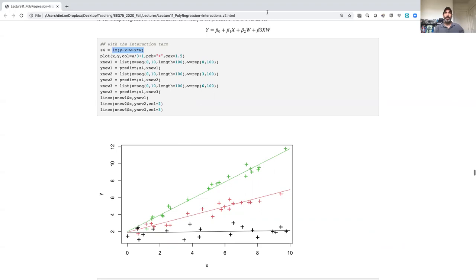So when I'm including this interaction term, now I'm seeing that this model is actually capturing what I was seeing visually, which is that the slope was clearly not the same for the relationship between x and y, but the slope and the relationship between x and y actually varied with w.